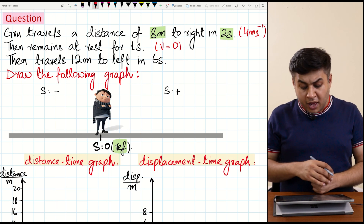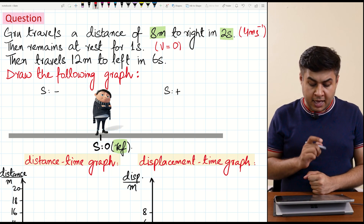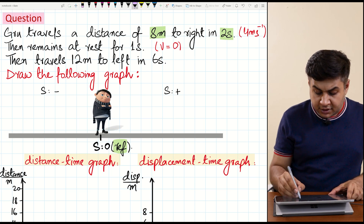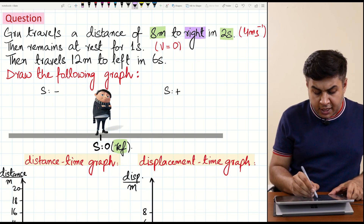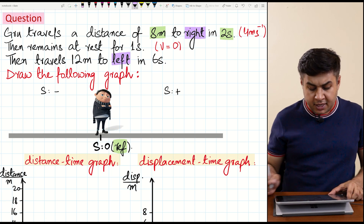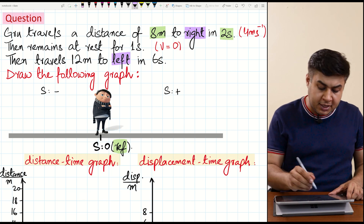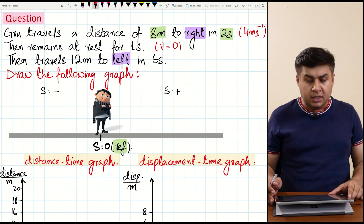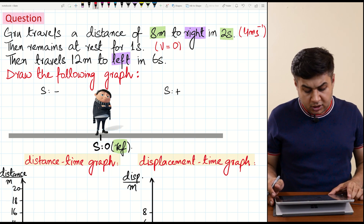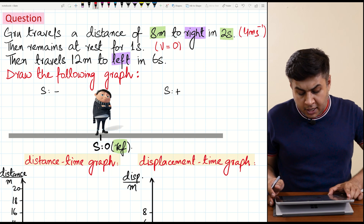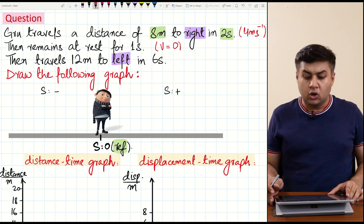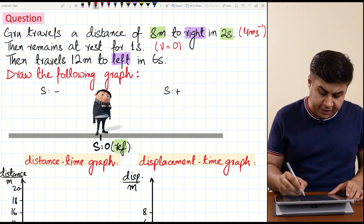Then he travels 12 meters to the left. Previously the direction was right, and now the direction is towards left in 6 seconds. What is his speed for the last part of the journey? Speed is distance over time. Distance is 12 and time is 6, so speed is coming out to be 2 meters per second.